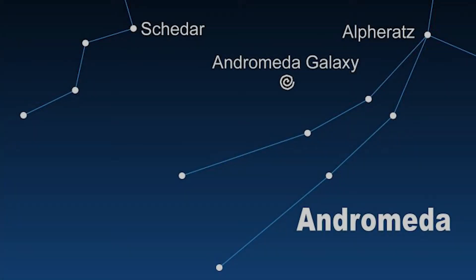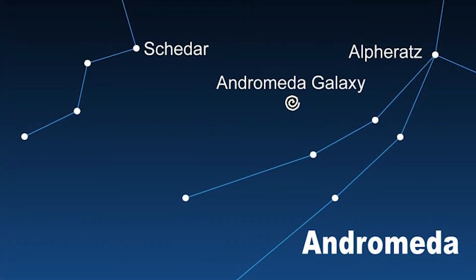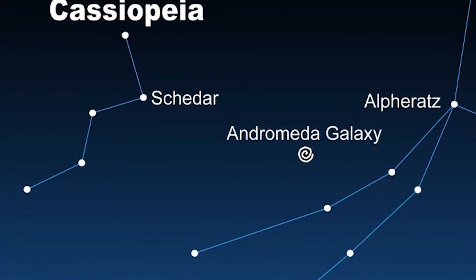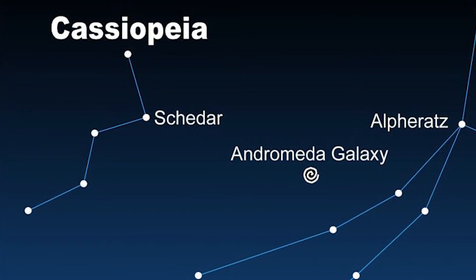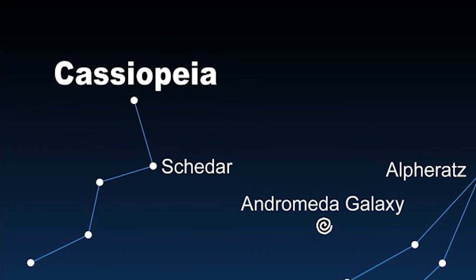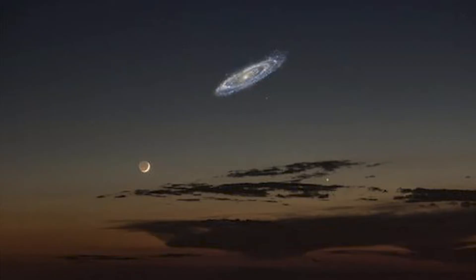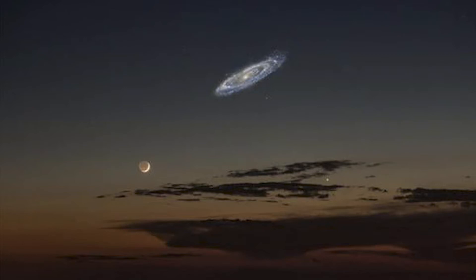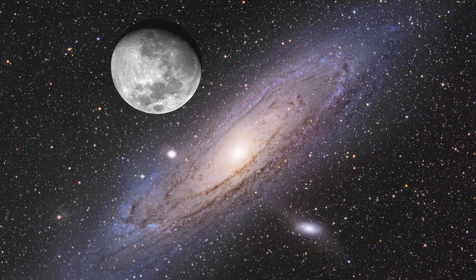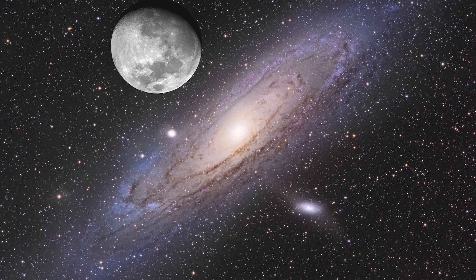The Andromeda Galaxy is our nearest neighboring galaxy, reaching a distance of about 250 million light years away. Andromeda is located in the Andromeda constellation near Cassiopeia. If we were able to see Andromeda, it would be roughly the size of six full moons in the sky. The radius of Andromeda is around 110,000 light years.